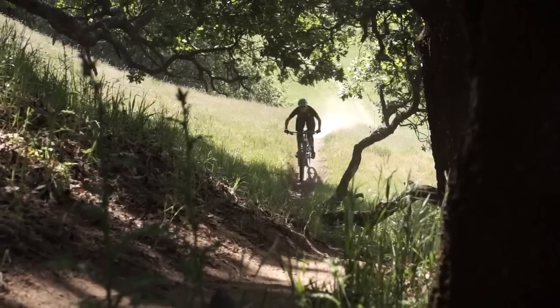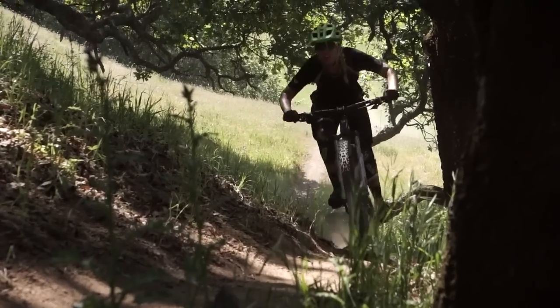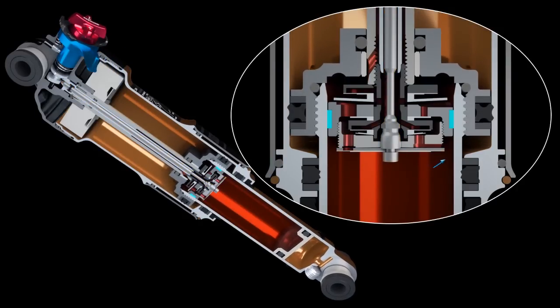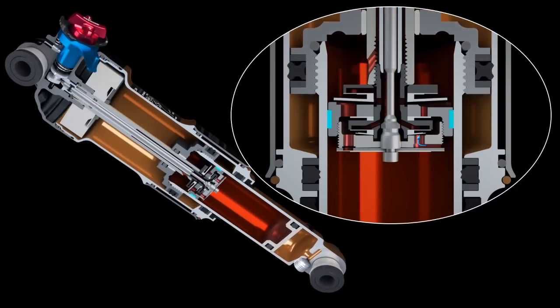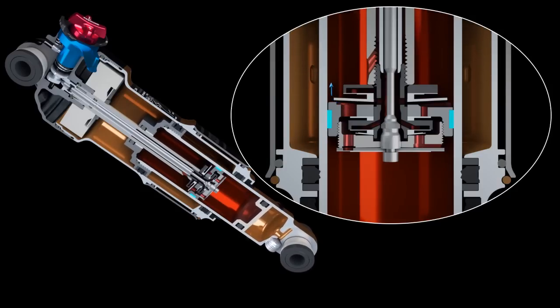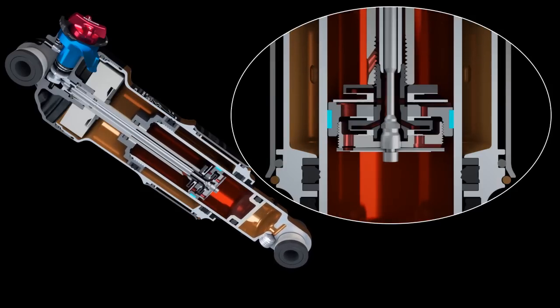The firm mode diverts all flow to a secondary shim stack in series with the high-speed compression shim stack to effectively lock out the shock when extremely firm damping is needed.